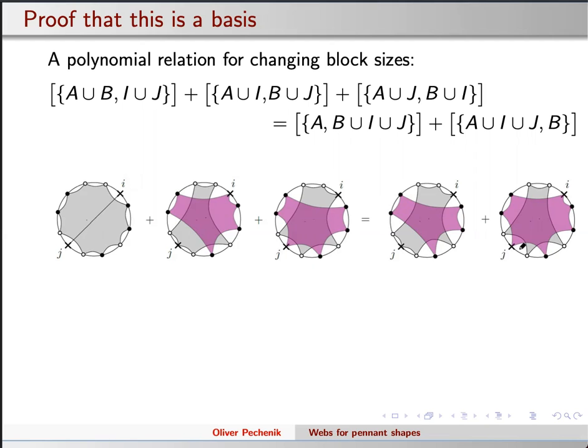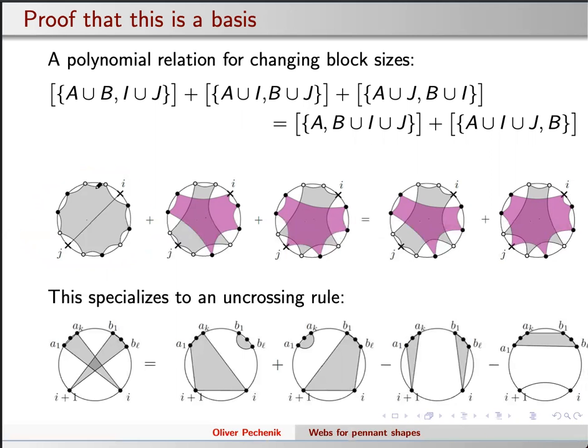And so you can take your thing where you have blocks of the wrong sizes and use this recurrence, which is some sort of amazing fact about determinants, to gradually rewrite things in terms of diagrams where you really do have one big block and then a bunch of pairs. So you can take one of these things and write it as a linear combination of things that do obviously live in the appropriate Specht module. And if you take this big relation, you can specialize it to a rule for uncrossing things. And so you can then take one of your crossing diagrams and use this rule to gradually rewrite it as a linear combination of things that don't cross. And that shows you that the non-crossing diagrams are spanning. The polynomials for non-crossing things are spanning your set. And there's the right number of them, as we already know. So they're a basis of this thing.